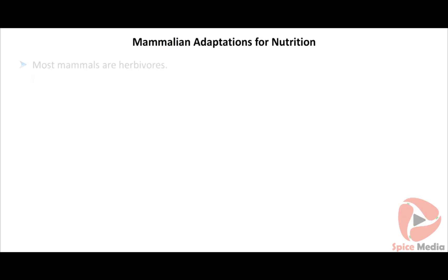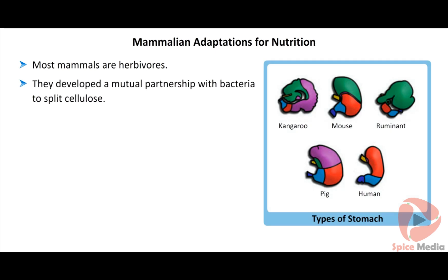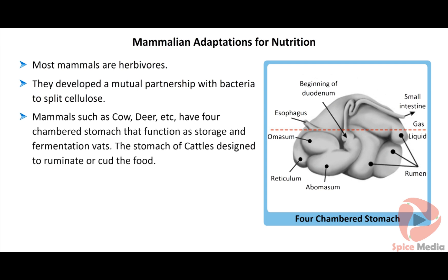The marsupials developed abdominal pouches to bear the tender young ones and nourish them with milk. Most mammals are herbivores. They developed a mutual partnership with bacteria to split and digest cellulose. Mammals such as cow, deer, etc. have four-chambered stomachs that function as storage and fermentation vats. The stomach of cattle is designed to ruminate or cud the food.